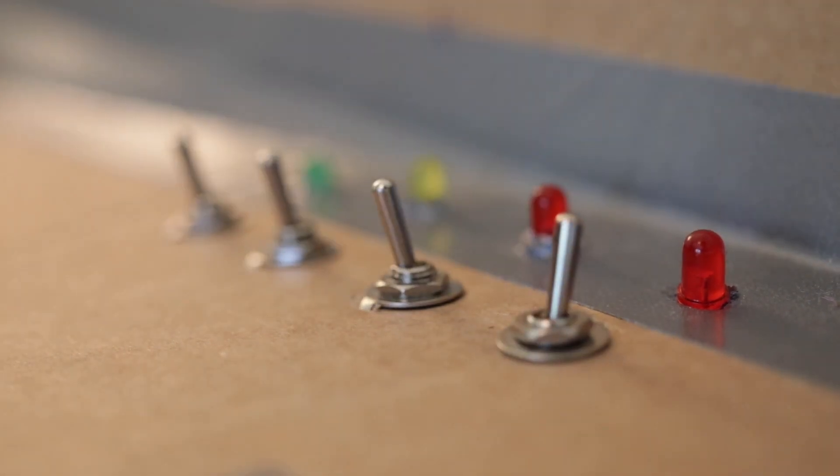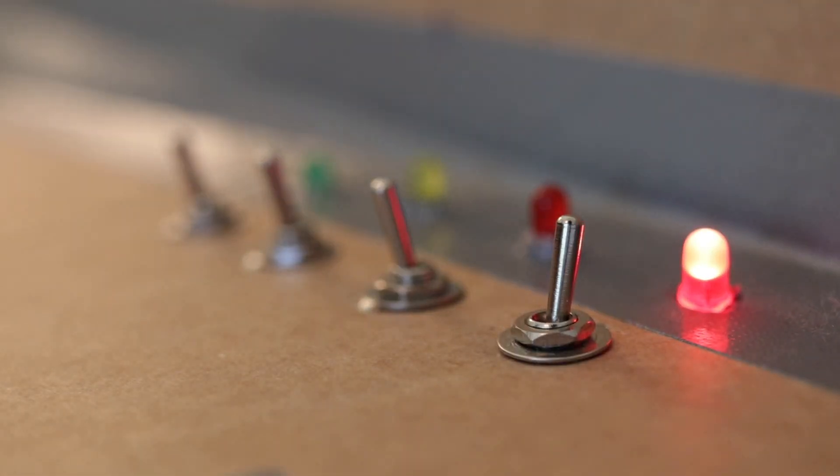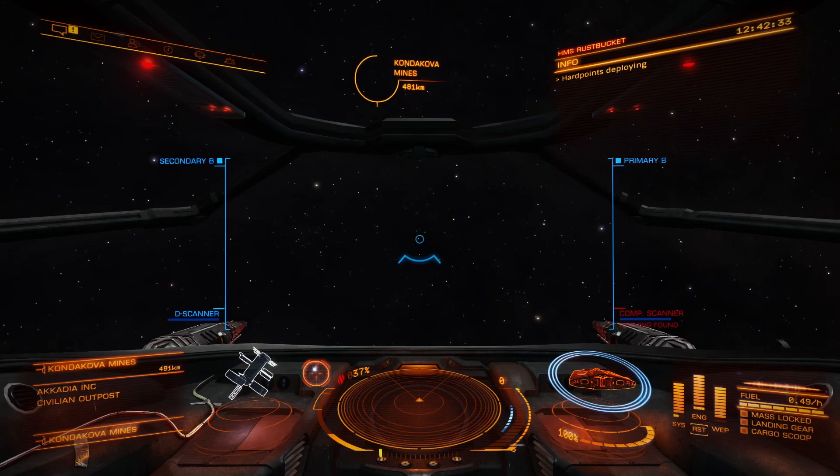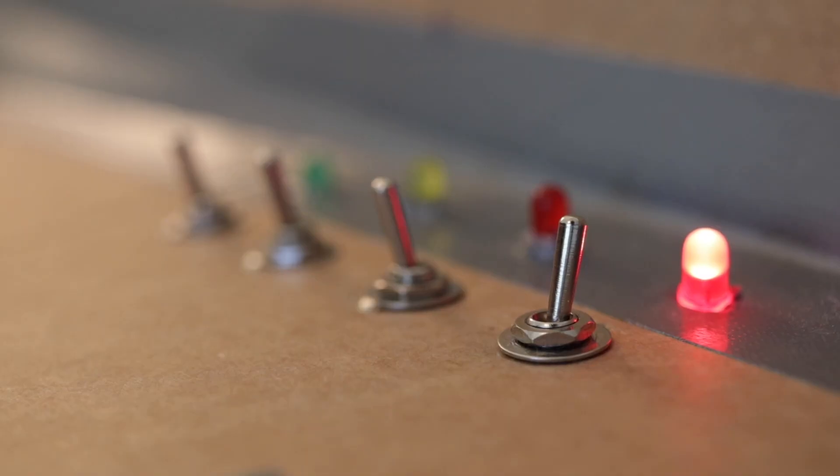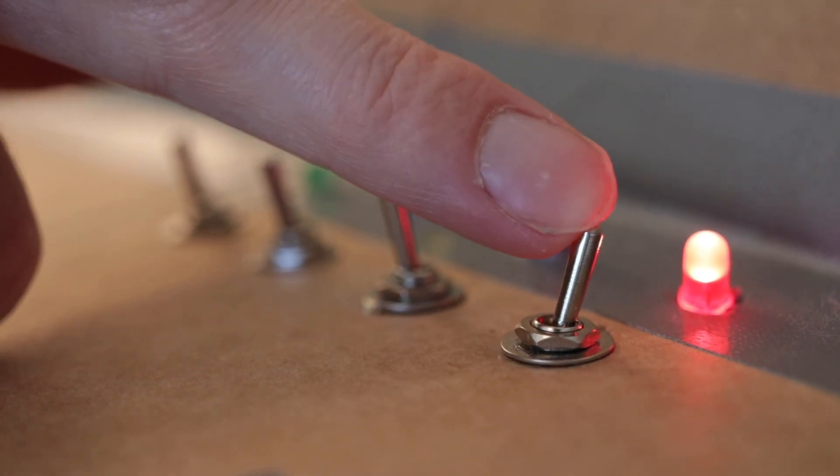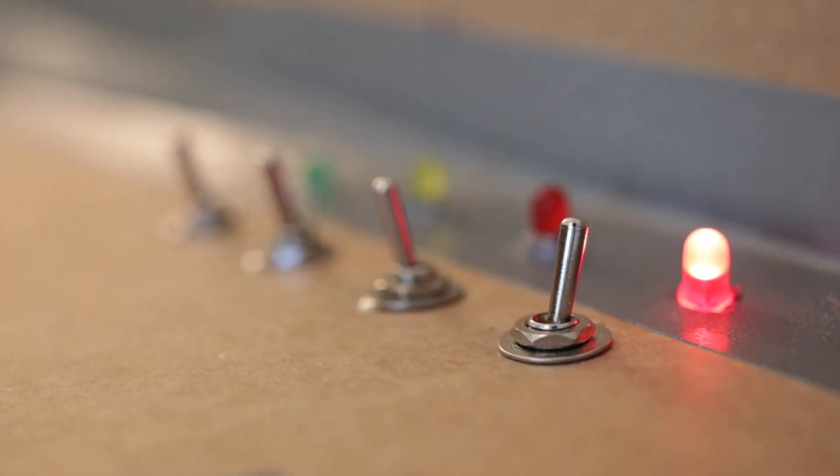As I switch this button, it sends one button click to the game. The game turns on my hardpoints and sends a signal back, lighting this one. And now the Arduino knows this one is in this position and this is the state of the game.